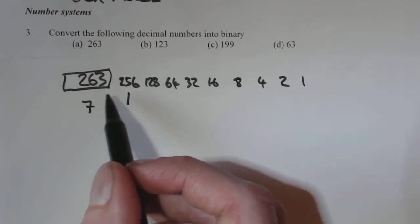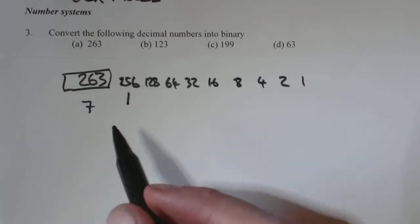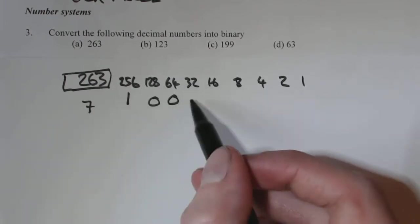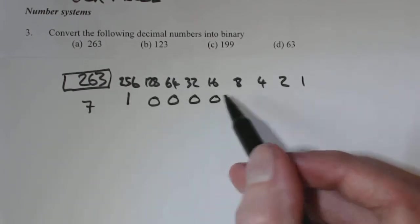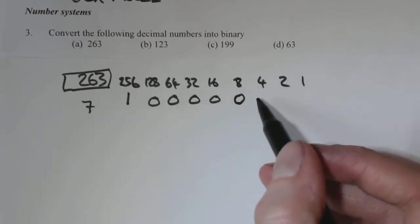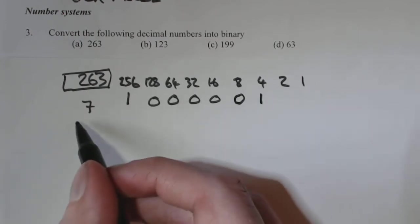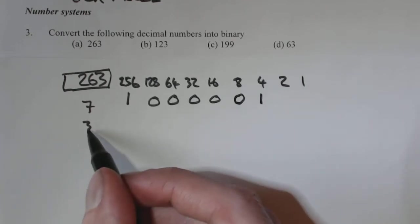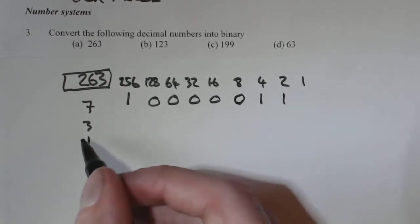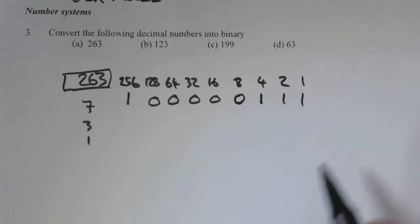What you're left with there is 7. So 7 plus 256, that's 263. That doesn't go into 7. Neither does 64. Neither does 32. 16 doesn't go into 7. 8 doesn't go. But 4 does. And you're left with 3. 2 goes into 3 once. Left with 1, and 1 goes into 1 once.